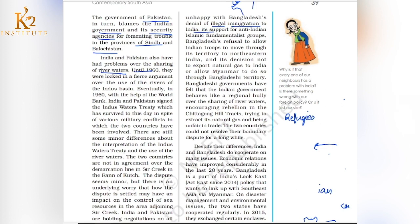We have told the Bangladesh government that illegal immigration is not acceptable. But Bangladesh denies it. Bangladesh has also been accused of supporting anti-Indian Islamic fundamentalist groups. India believes Bangladesh is supporting these anti-Indian groups.